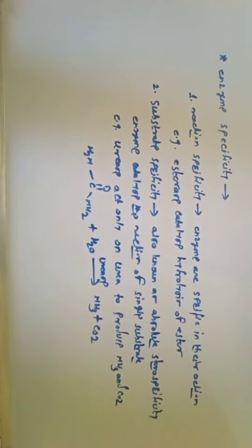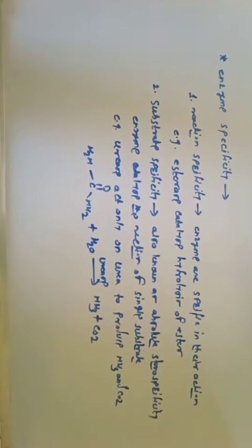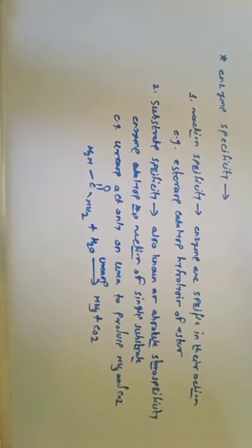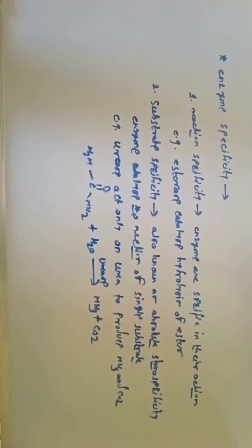The second specificity is substrate specificity. Some enzymes catalyze the reaction of a single substrate only. For example, the enzyme urease acts only on urea to produce ammonia and CO₂. This substrate specificity is also known as absolute stereospecificity, where the enzyme catalyzes the reaction of a single substrate only.